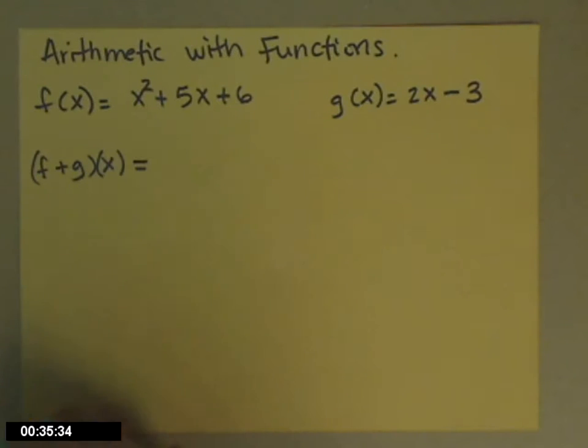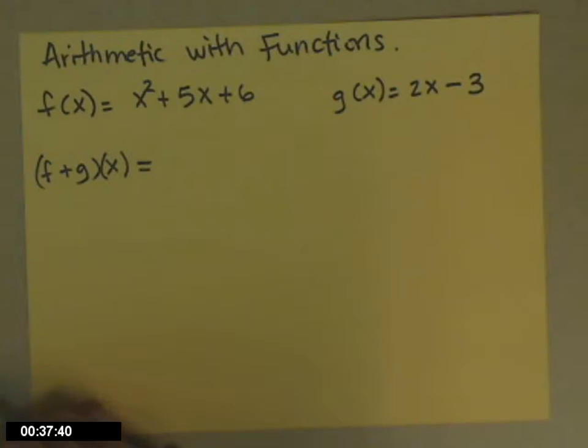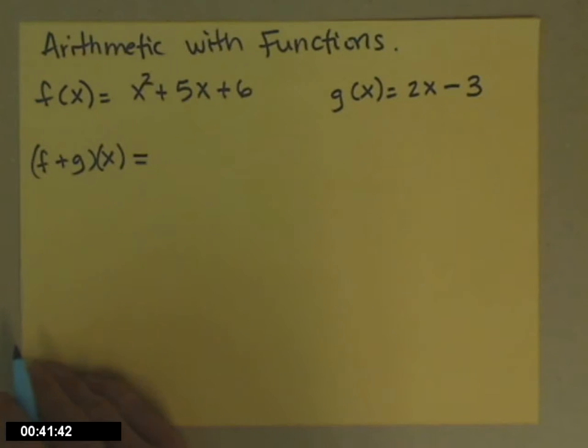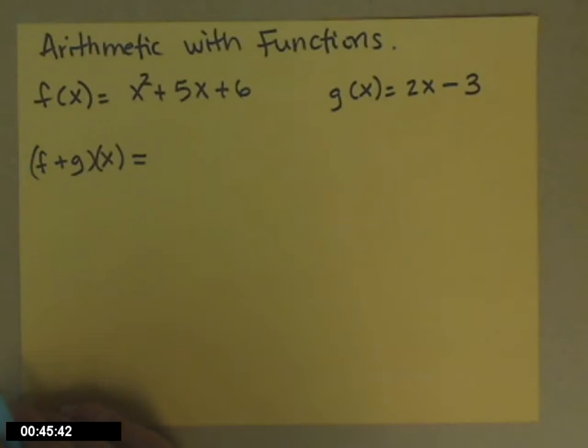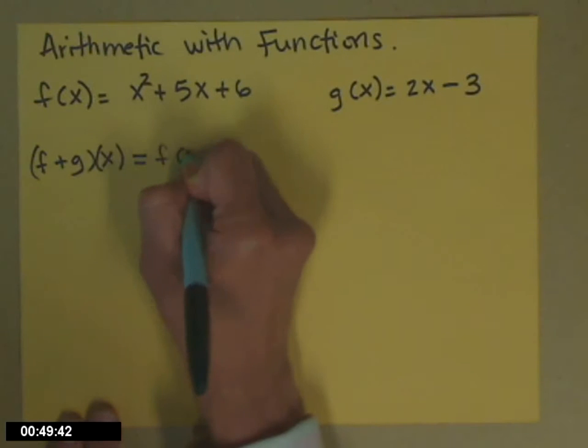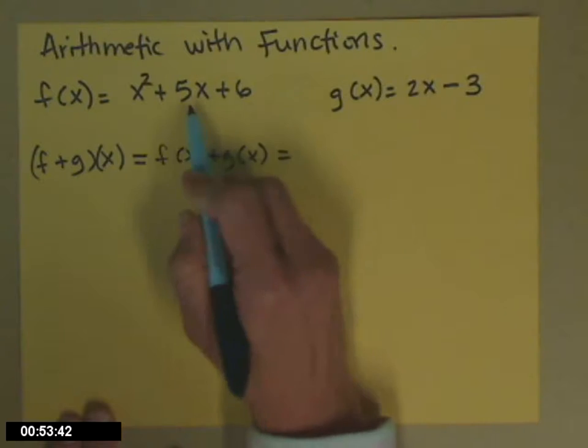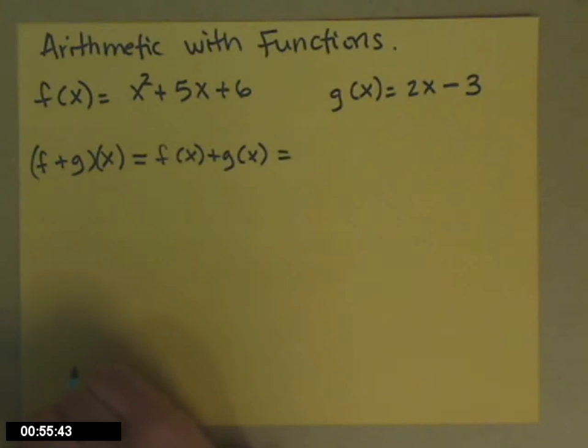So chapter 13 tells us that we can add these two functions together and come up with a new function. And it's very intuitive. There's only one part that can trick students, so I will point that out to you. But f plus g of x is the same thing as f of x plus g of x. So to find it, I just add the two left sides and combine like terms.